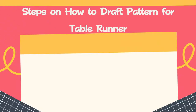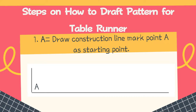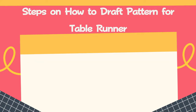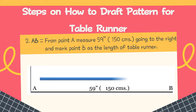Here are the steps to draft a pattern for a table runner. Step 1: draw a construction line and mark point A as the starting point. The construction line consists of a horizontal and a vertical line. Step 2 (AB): from point A, measure 59 inches — or 150 centimeters — going to the right, and mark point B as the length of the table runner. Don't forget to mark point B at the end of the 59 inches.